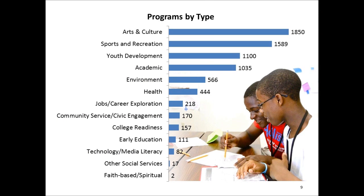Now we can take that data and break it down to an even further level of granularity. Here we have listed programs by their reported type, and this gives us an indication of what kinds of programs are most frequently found in Boston. Note that programs are allowed to report more than one program type, so while the absolute numbers may not be useful, the relative positionings of these different types does give an indication of what is offered.